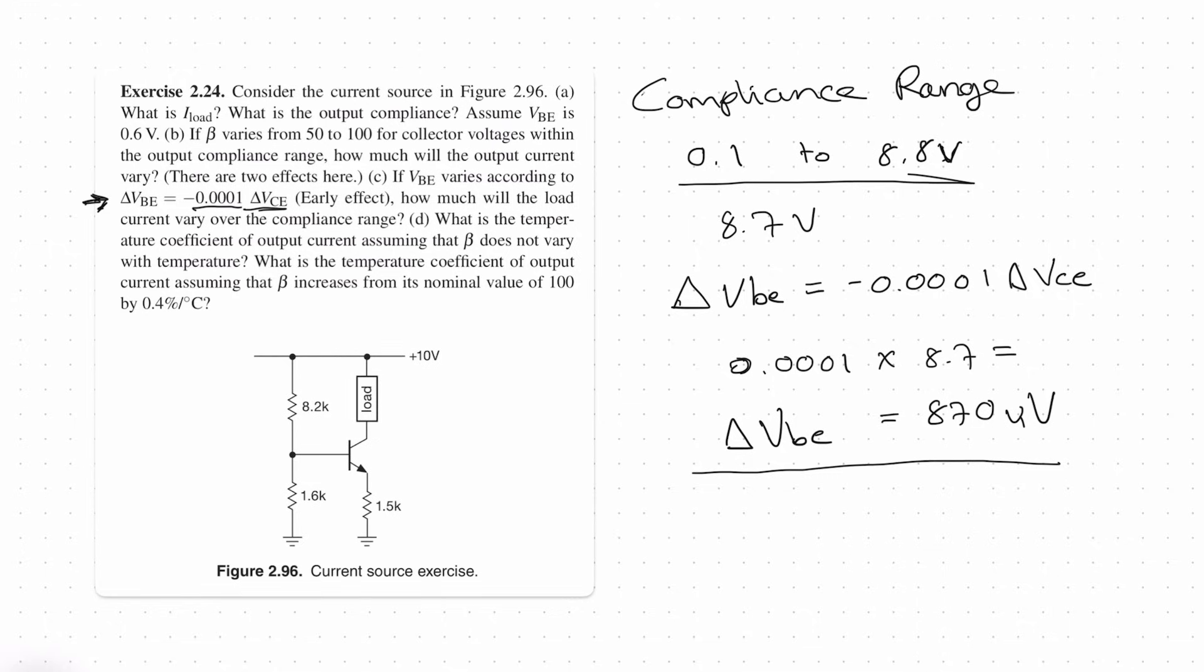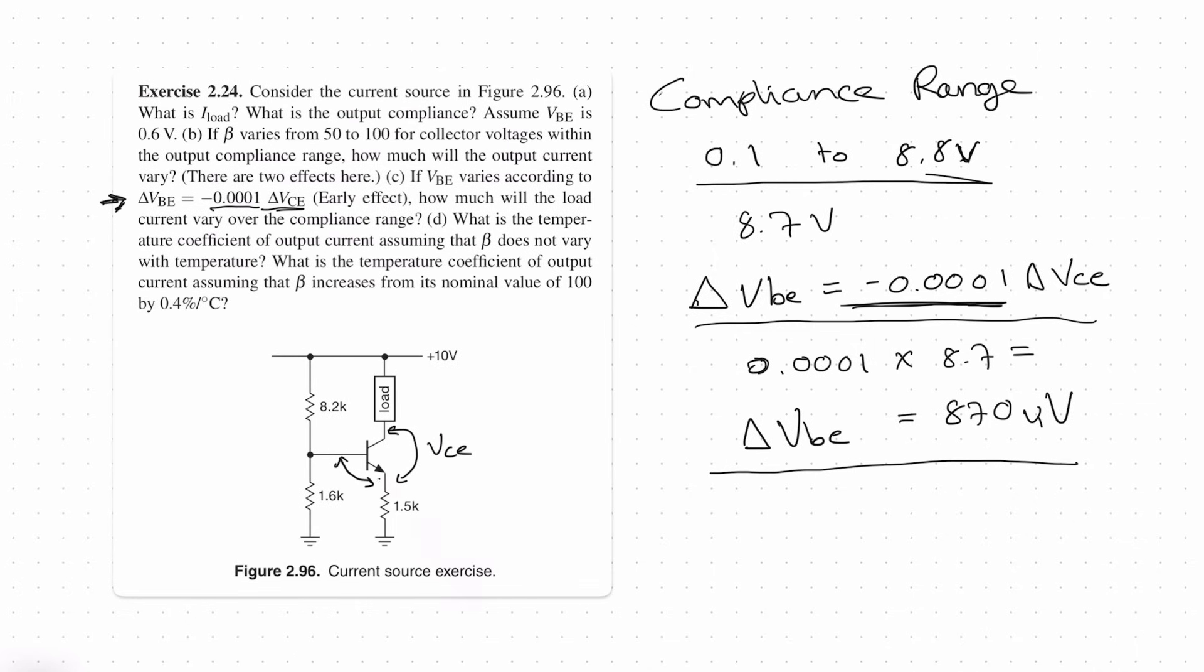We can calculate the change in load current which is approximately the change in emitter current as we know from this circuit over here. So what this equation is telling us is that as the voltage over here VCE changes, the voltage over here will change according to this relationship. So as VCE goes up, VBE will go down by approximately 870 microvolts.